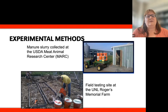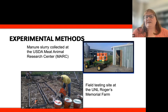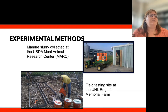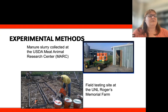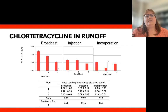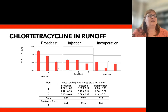We used manure collected from a USDA research facility — a well-characterized manure source where we had very good records on what antibiotics had been given to the animals that produced it. We conducted this through a series of field-scale runoff experiments at an experimental farm at UNL in collaboration with colleagues at USDA. For interest of time, I'll present one piece of data focusing on the presence of chlorotetracycline, an antibiotic, in runoff.